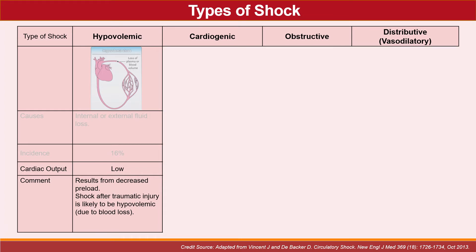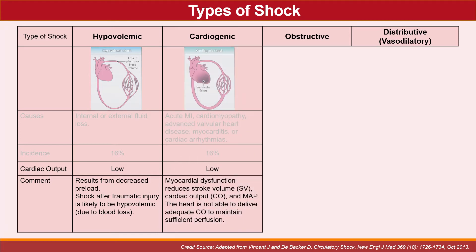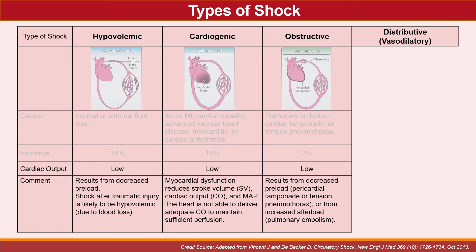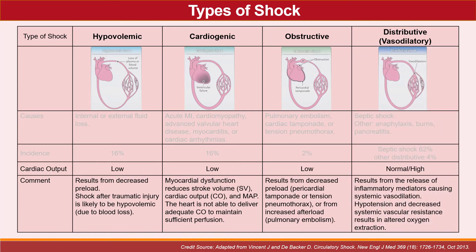In hypovolemic shock, cardiac output is low due to decreased preload — shock after traumatic injury is likely hypovolemic from blood loss. In cardiogenic shock, cardiac output is also low due to significant myocardial dysfunction where the heart cannot deliver adequate output. In obstructive shock, cardiac output is low due to increased afterload in pulmonary embolism or decreased preload in pericardial tamponade or tensioned pneumothorax. Notably, in septic shock, cardiac output is either normal or high, due to release of inflammatory mediators such as endotoxin and cytokines causing systemic vasodilation, which leads to hypotension and decreased systemic vascular resistance affecting tissue oxygen extraction.